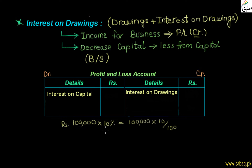We calculate interest on capital like this: 1 lakh rupees multiplied by 10, divided by 100, which gives us 10,000 rupees. So the interest on capital is 10,000 rupees, and we have written this on the debit side of the profit and loss account, as it is a business expense owed to the business owners.